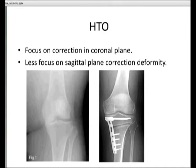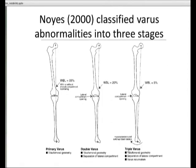His argument was that for bony malalignment, you address the bony factors. But when they progress to double and triple varus, that's when you start to have to address the ligamentous component as well.